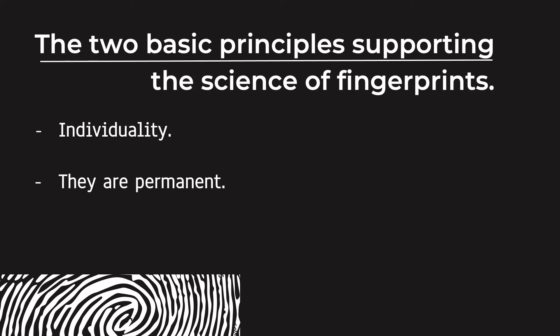There are two basic principles supporting the science of fingerprints. The first is individuality. An example of individuality is when twins are born — they have the same DNA, but not the same fingerprint. The odds of two people having the same fingerprint is 1 in 100 million. That is why fingerprints are used as a unique identifier.